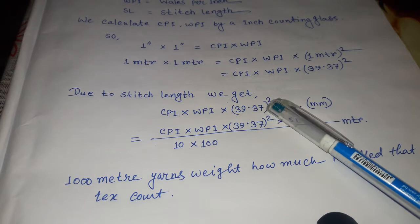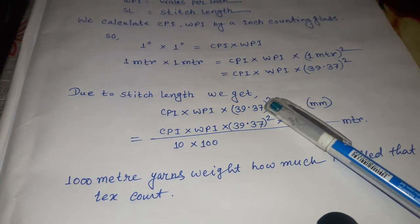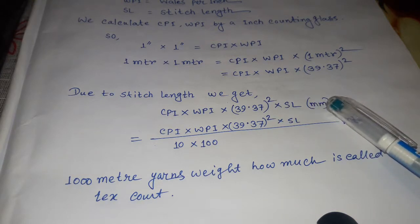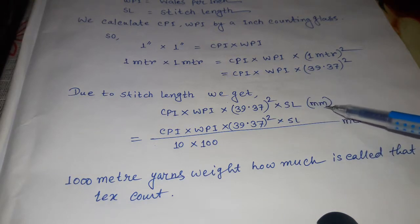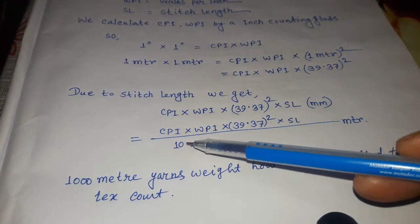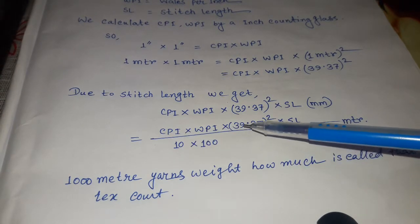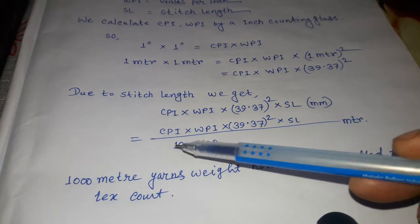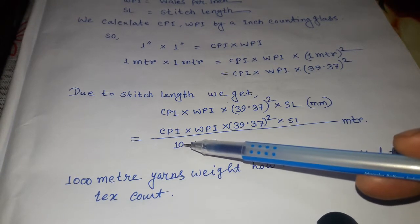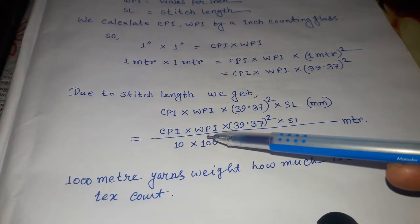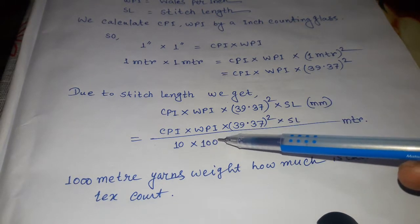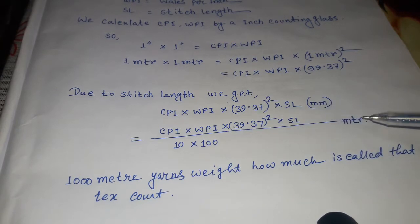39.37 squared into stitch length in millimeters. To convert millimeter to meter, CPI times WPI—when we divide by 10 it becomes centimeters, then divide by 100 to convert to meters.